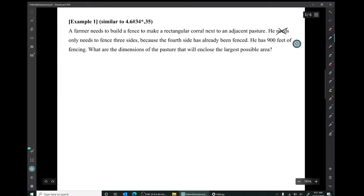In the first example, a farmer needs to build a fence to make a rectangular corral next to an adjacent pasture. He only needs to fence three sides because the fourth side has already been fenced. He has 900 feet of fencing. The question is, what are the dimensions of the pasture that will enclose the largest possible area?